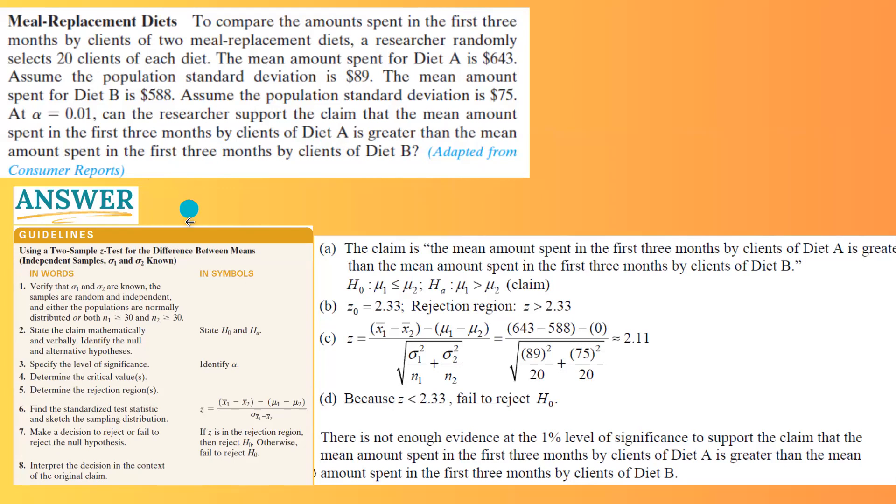It's definitely a Z test. Why? Because we are comparing the population means and you have two different diets, two different sets of clients, and sigma 1, sigma 2, or population standard deviations are given to us. So let us follow these steps.